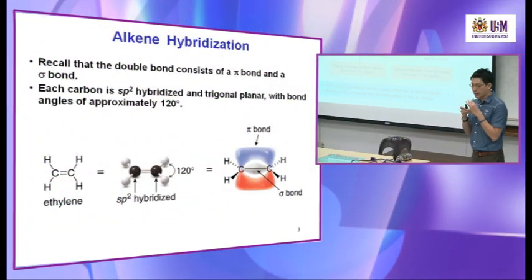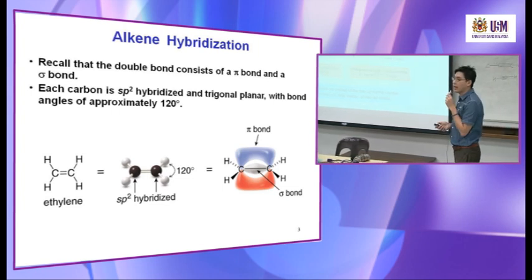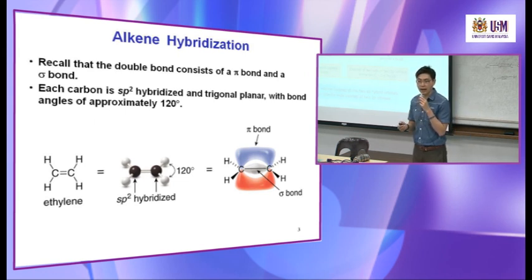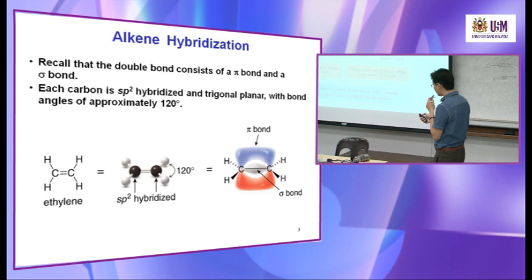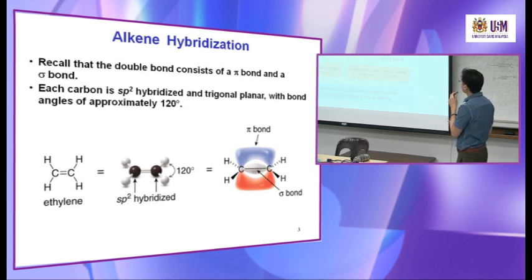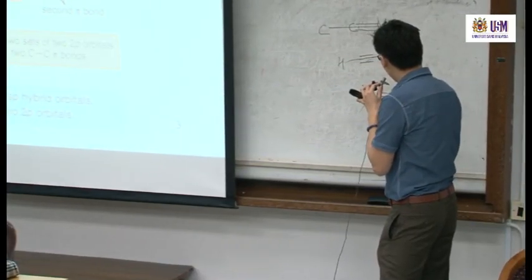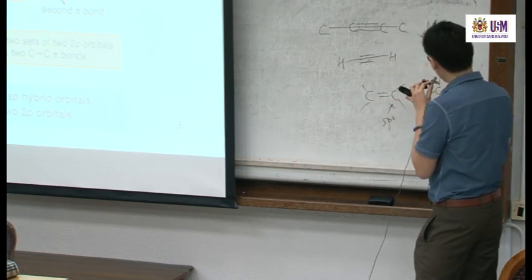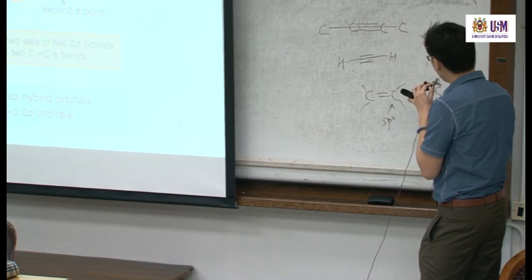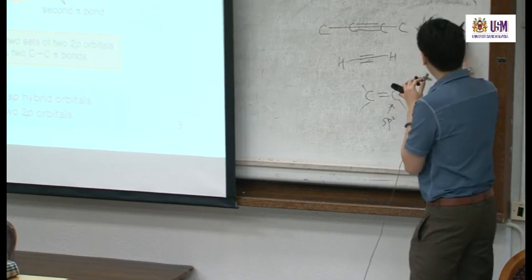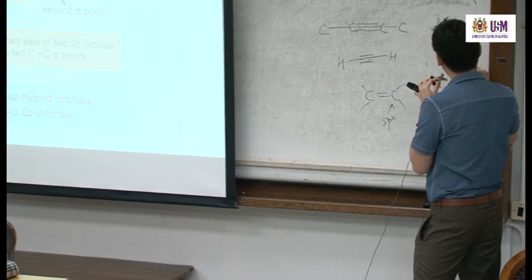Acetylene can also be called ethyne. To name alkynes, replace A-N-E with Y-N-E. This carbon in alkyne is sp hybridized. For a double bond, the carbon is sp2; for an alkane, it's sp3; and for an alkyne it's simply sp — not sp2, just sp.